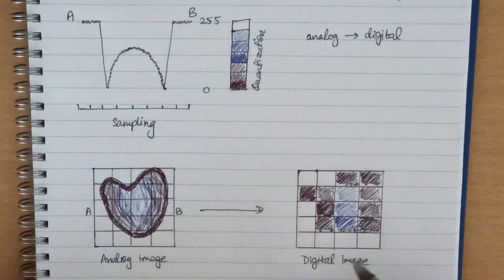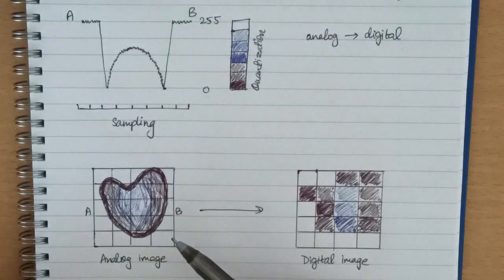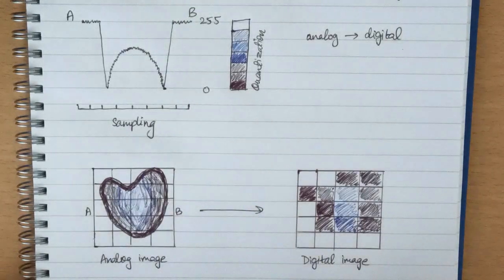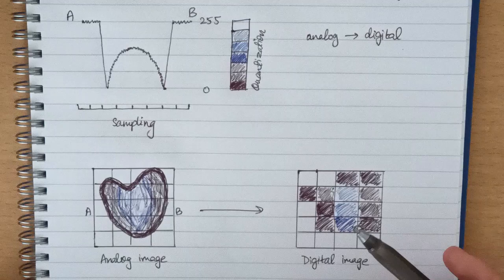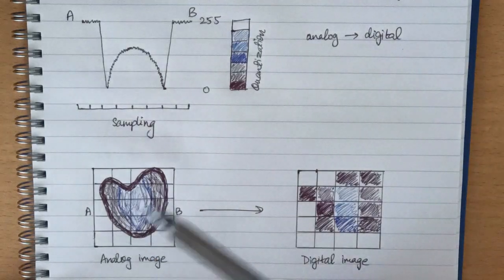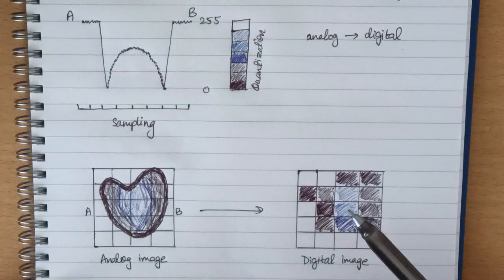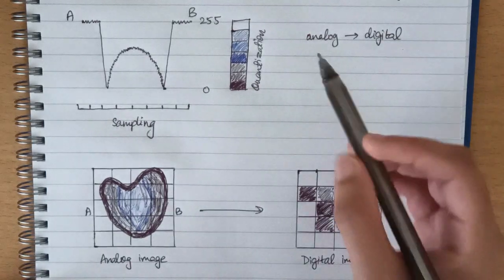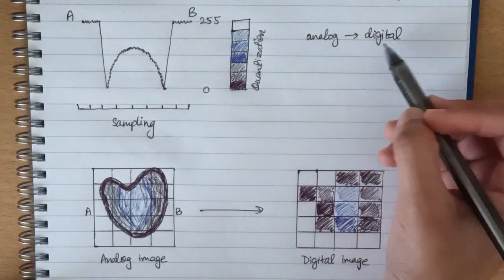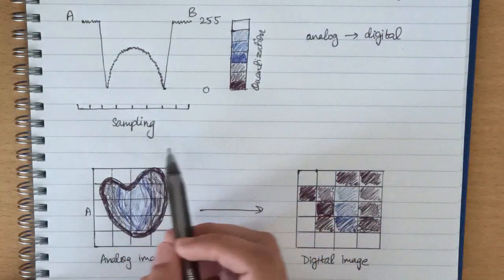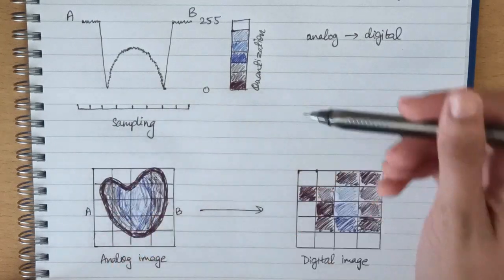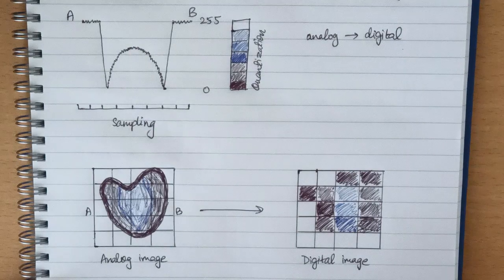I have roughly drawn the digital image here. I know it doesn't look exactly like the analog image, but that is because this is done with pen and paper. When it is done on computers, the pixel values are taken even smaller so the digital image is more accurate and precise. To summarize: in order to use an image for digital processing we need to convert it from analog to digital using sampling and quantization — where sampling is digitizing the coordinate values and quantization is digitizing the amplitude values. I'll see you in the next one.